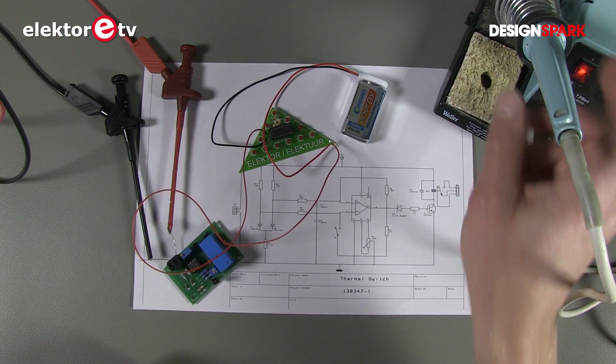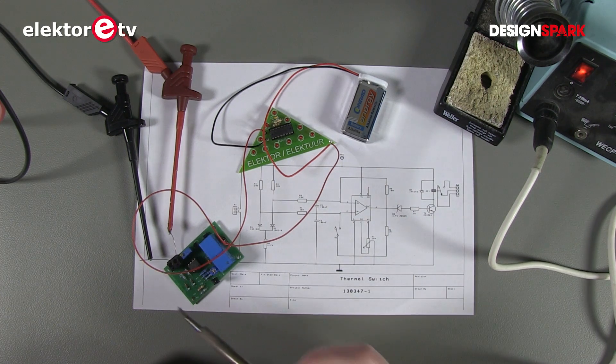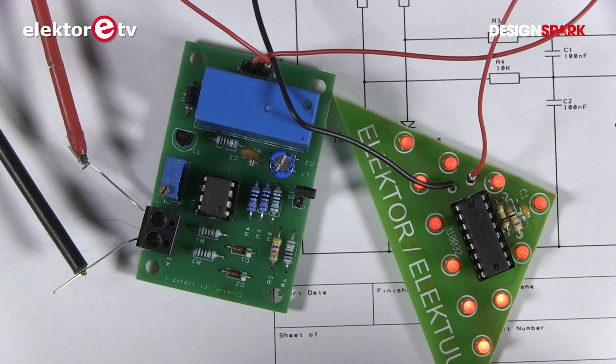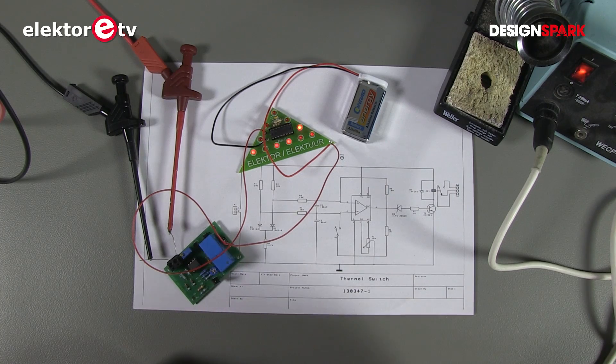So to show you this, I have a soldering iron here. It's a heated soldering iron. I'll keep it close to the diode. And there it goes. You can see the LEDs are blinking.